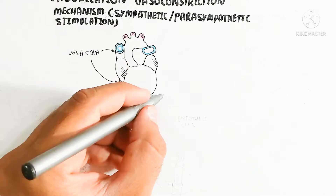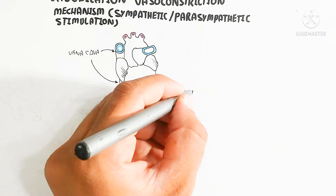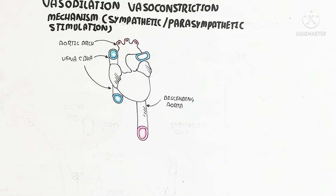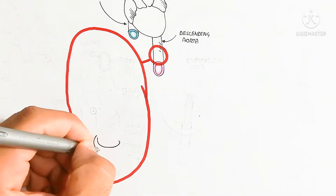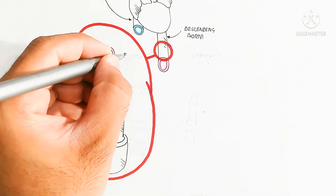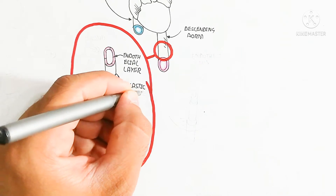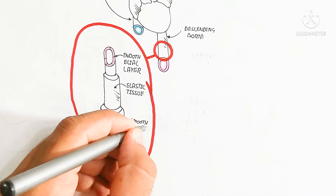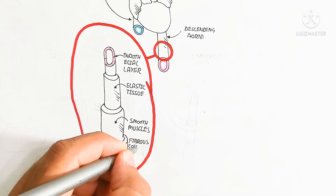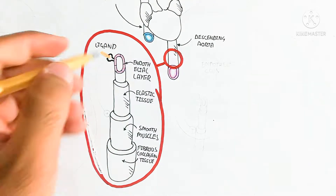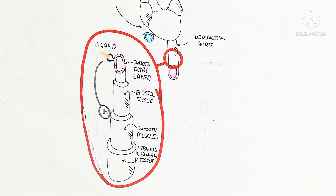Let's begin to understand the layers of the blood vessel. The outermost layer is the fibrous collagen tissue, while the innermost is the endothelial layer, which contains endothelial cells and elastic tissue. The smooth muscle cell is the outer layer used for vasoconstriction and vasodilation. When a ligand binds inside the blood circulatory system, it will stimulate the smooth muscles, as well as the digestive tract.